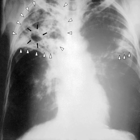Diagnosing active tuberculosis based only on signs and symptoms is difficult, as is diagnosing the disease in those who have a weakened immune system. A diagnosis of TB should be considered in those with signs of lung disease or constitutional symptoms lasting longer than two weeks. A chest X-ray and multiple sputum cultures for acid-fast bacilli are typically part of the initial evaluation. Interferon gamma release assays and tuberculin skin tests are of little use in the developing world.